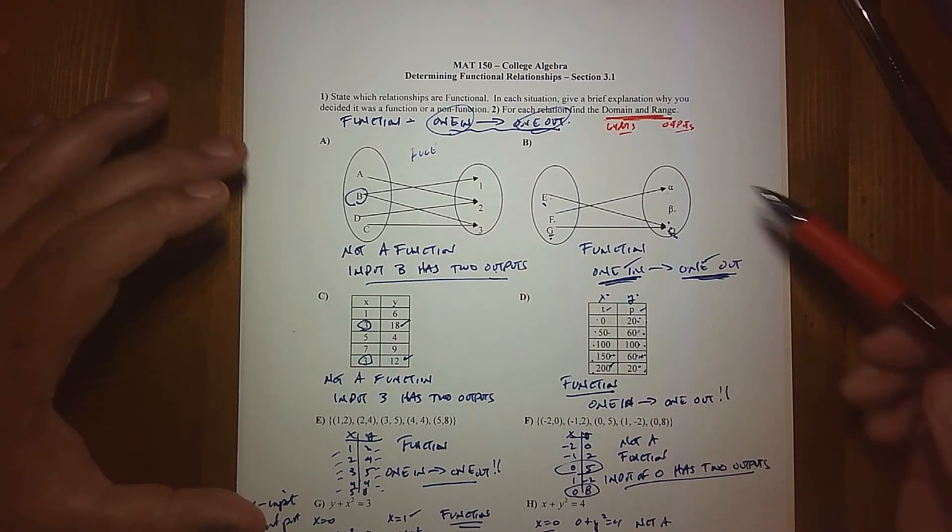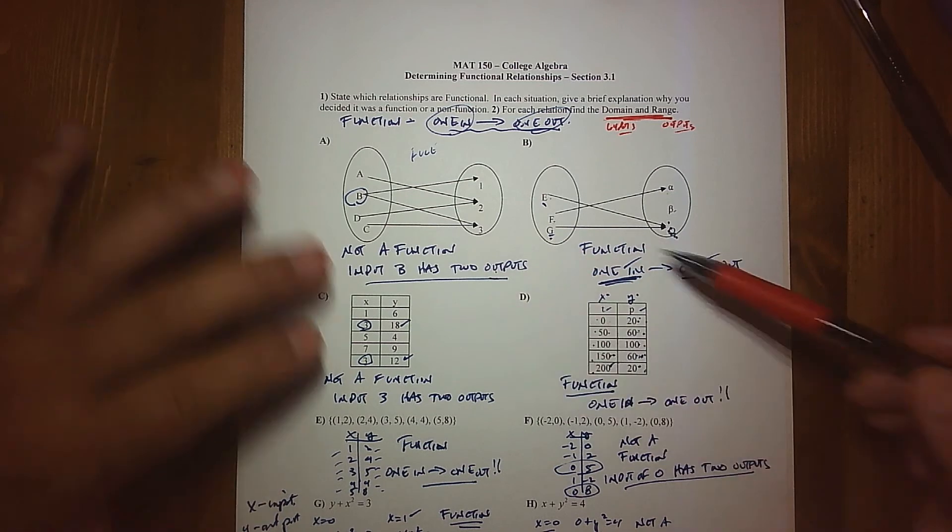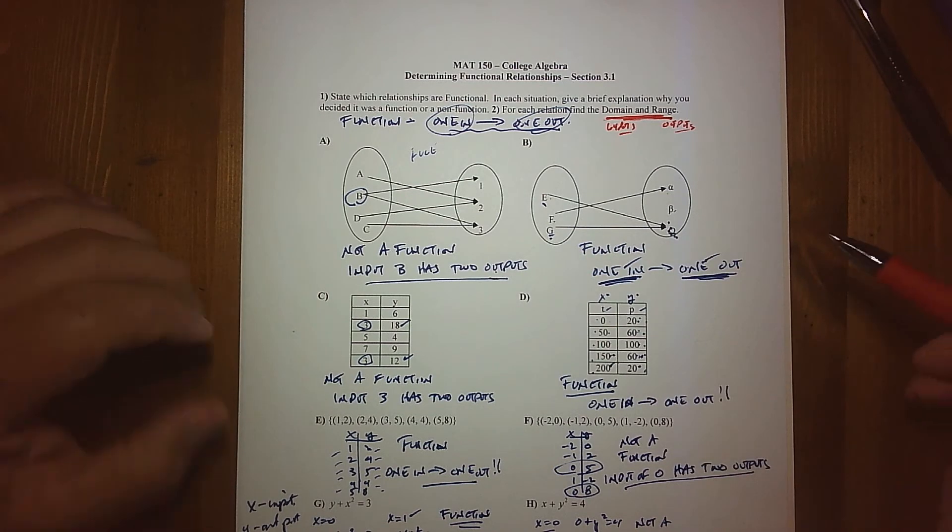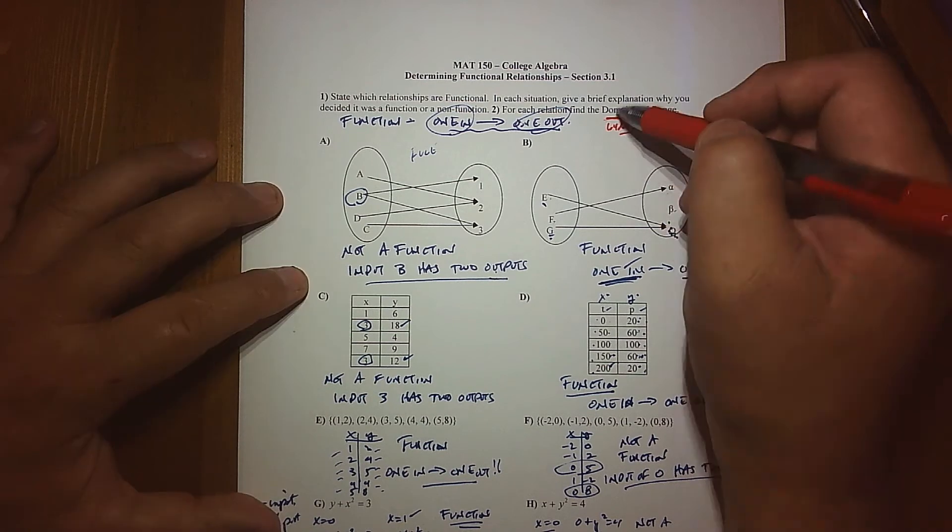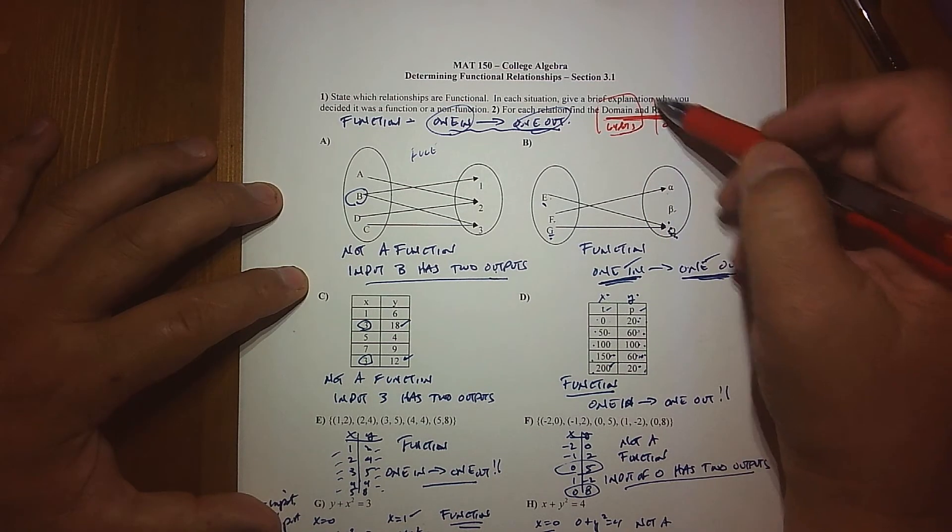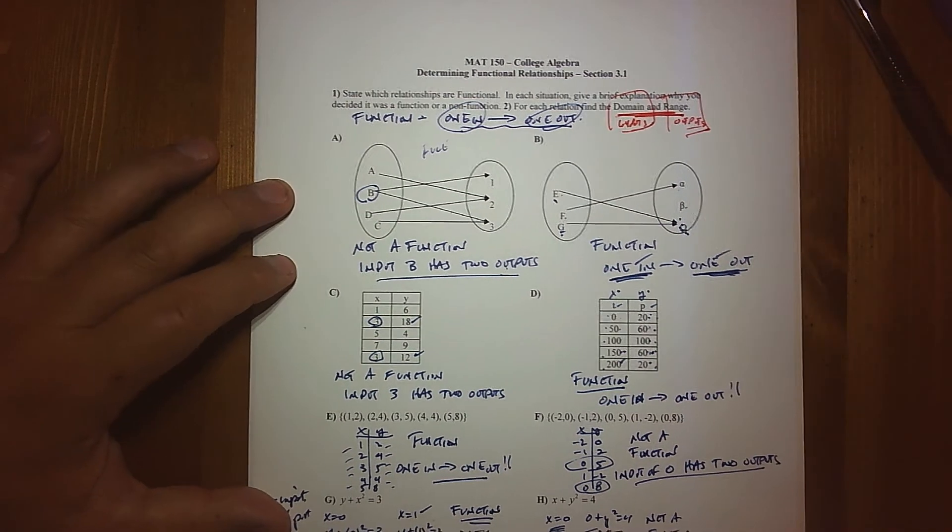And so we're going to take another look. We already know which relations are functions, that was an earlier video. But for each one of these relations, what's the set of inputs (domain) and what's the set of outputs (range)?